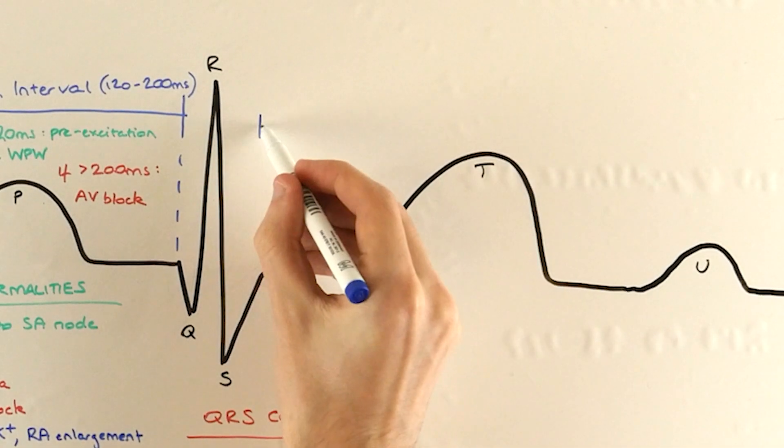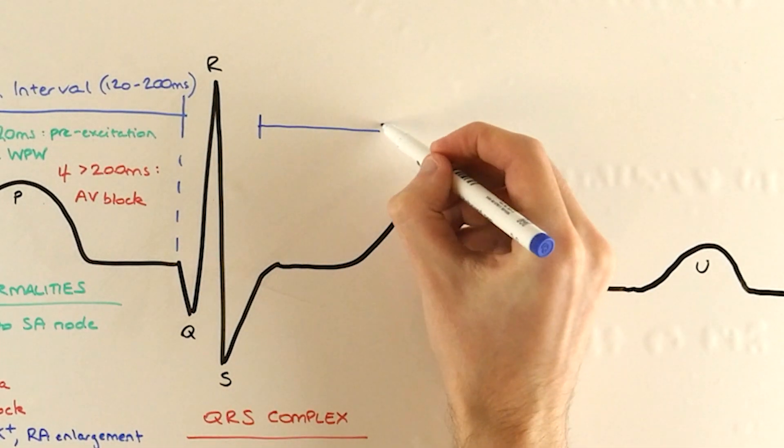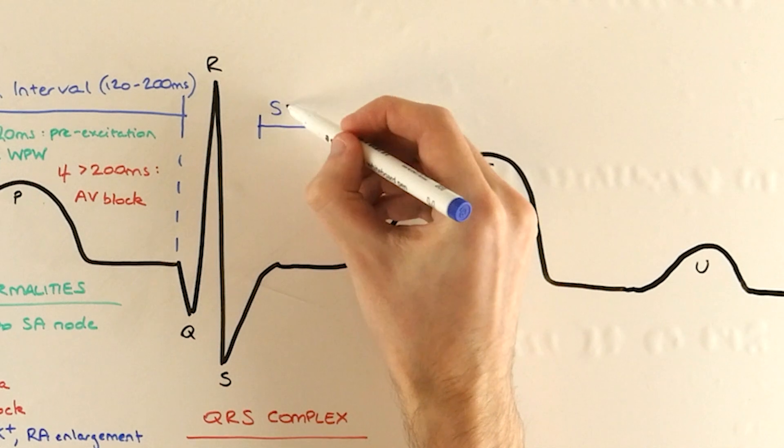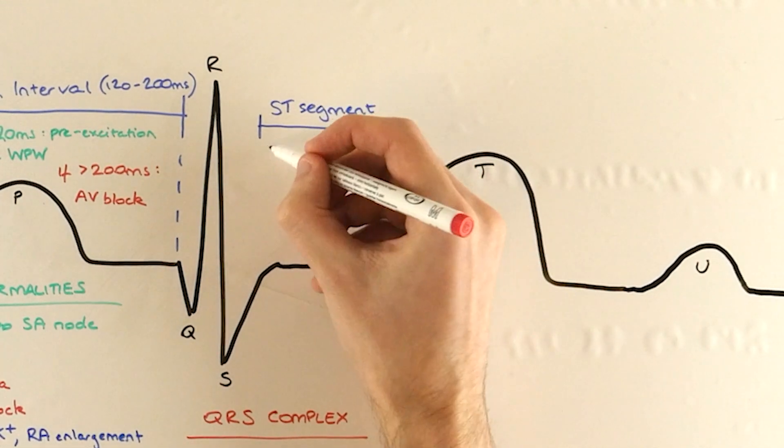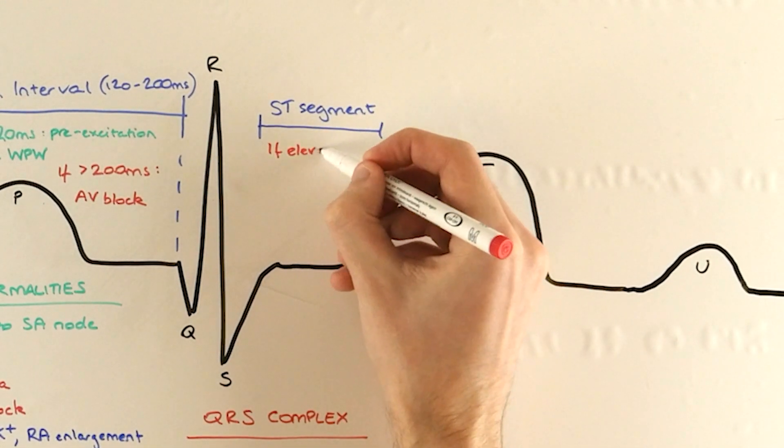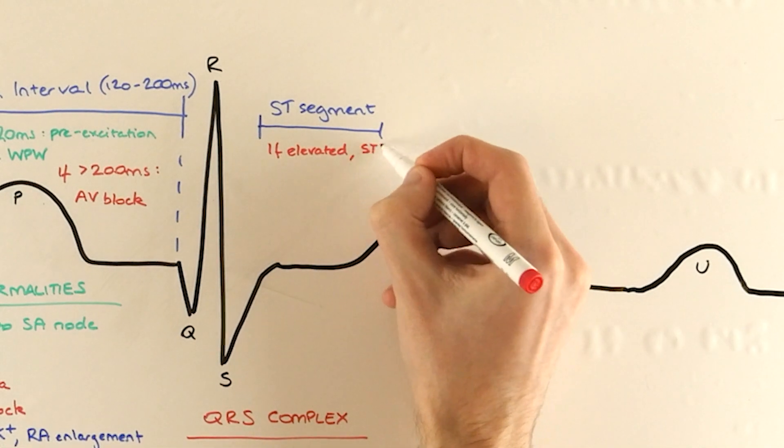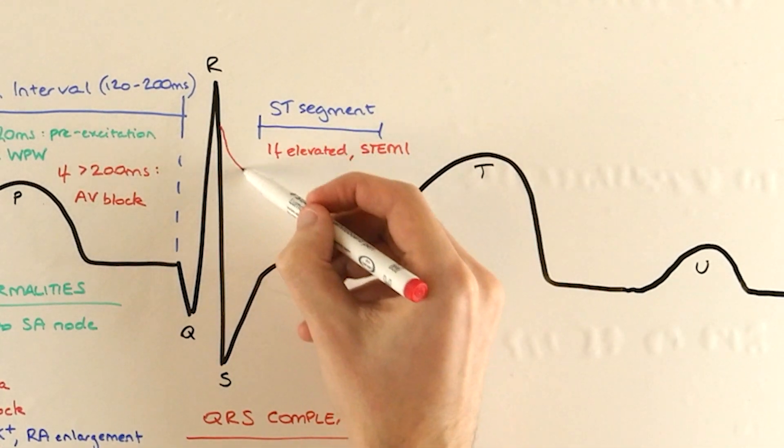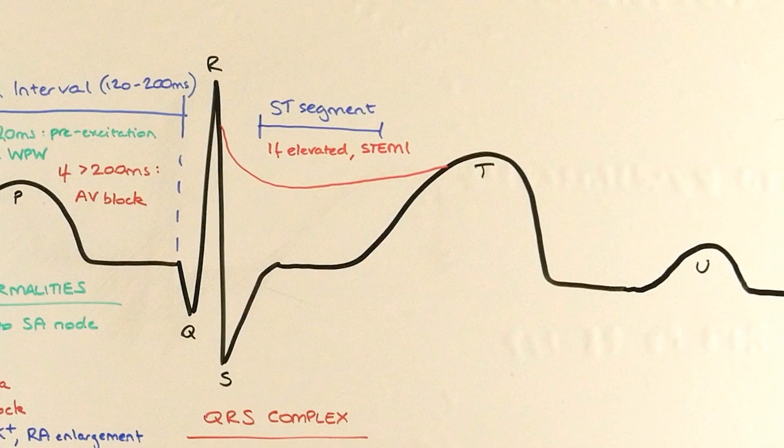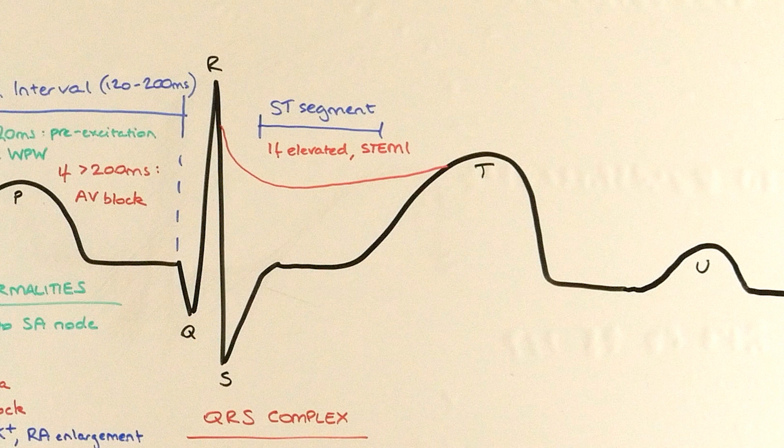The ST segment is maybe the most important section for medical students to know. You'll remember before that we said it really needs to be flat, and if it's elevated that's actually suggestive of damaged heart tissue, as in myocardial infarction, a heart attack, and this would suggest ST-elevated myocardial infarction, or a STEMI.